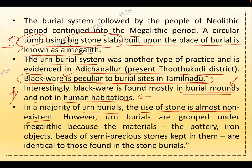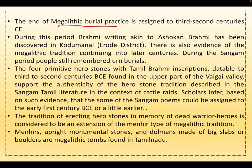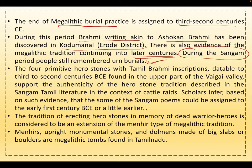In a majority of urn burials, the use of stone is almost non-existent. However, urn burials are grouped under Megalithic because the materials — pottery, iron objects, and beads of semi-precious stones — found in them are identical to those found in stone burials. The end of megalithic burial practice is assigned to the third to second centuries BCE. During this period, Brahmi writing of Ashokan Brahmi has been discovered at Kodumanal in Erode district. Evidence of megalithic tradition continuing into later centuries also exists — during the Sangam period, people still remembered the urn burial practice.